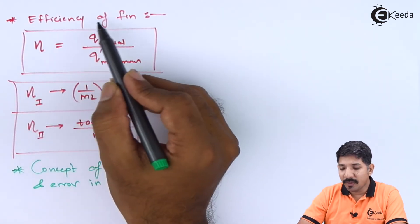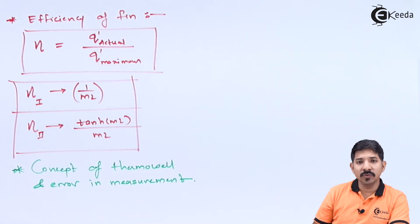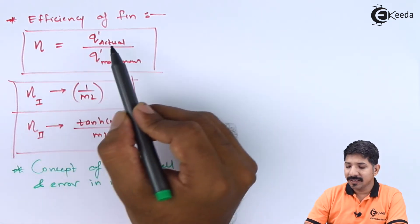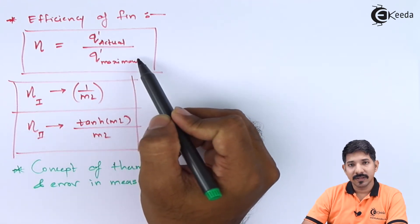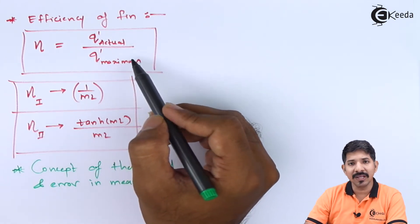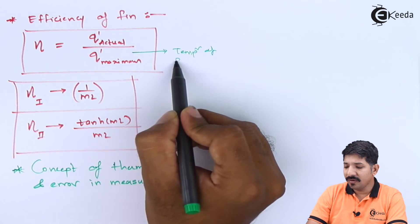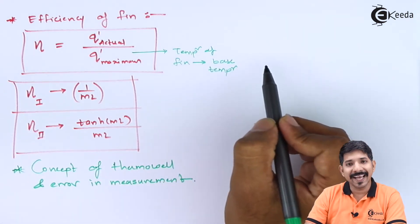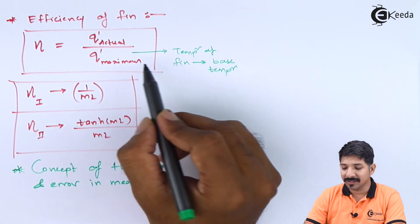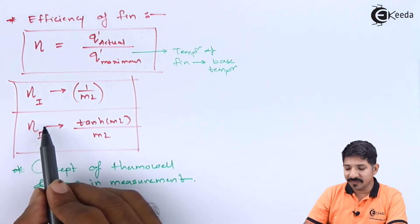We also discussed the efficiency of the fin. Once we confirm that fins are effective, we check whether their efficiency is also high. Efficiency is Q_actual divided by Q_maximum. Q_actual is the actual heat transfer rate of the fin, and Q_maximum is the heat transfer rate if the entire fin were held at the base temperature T₀.